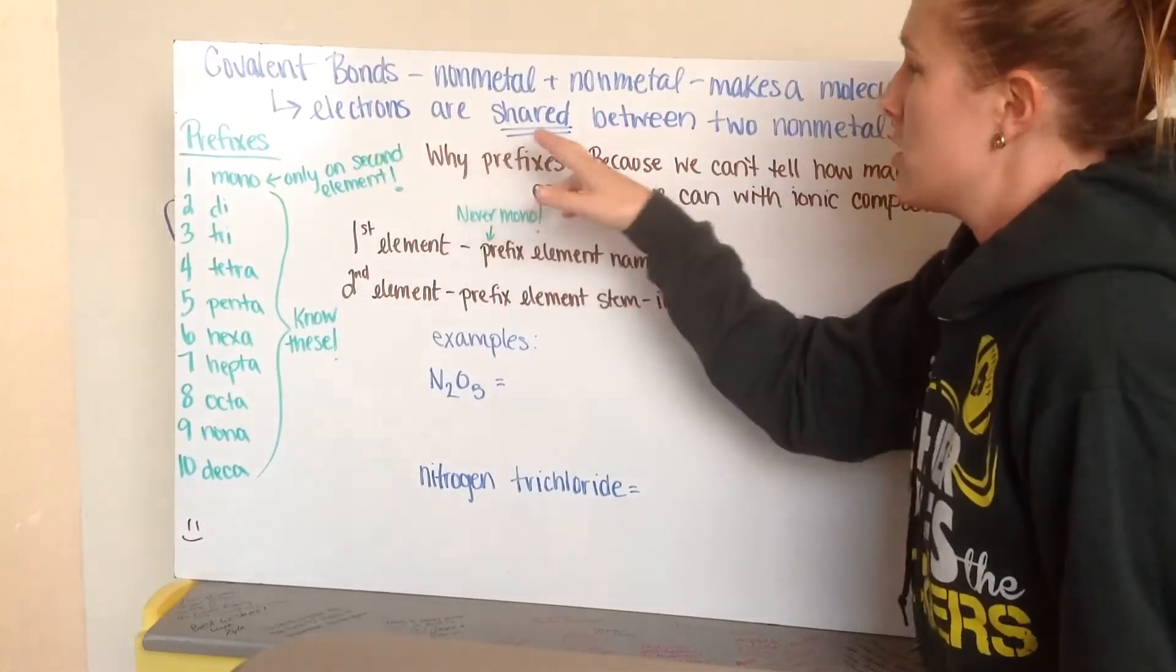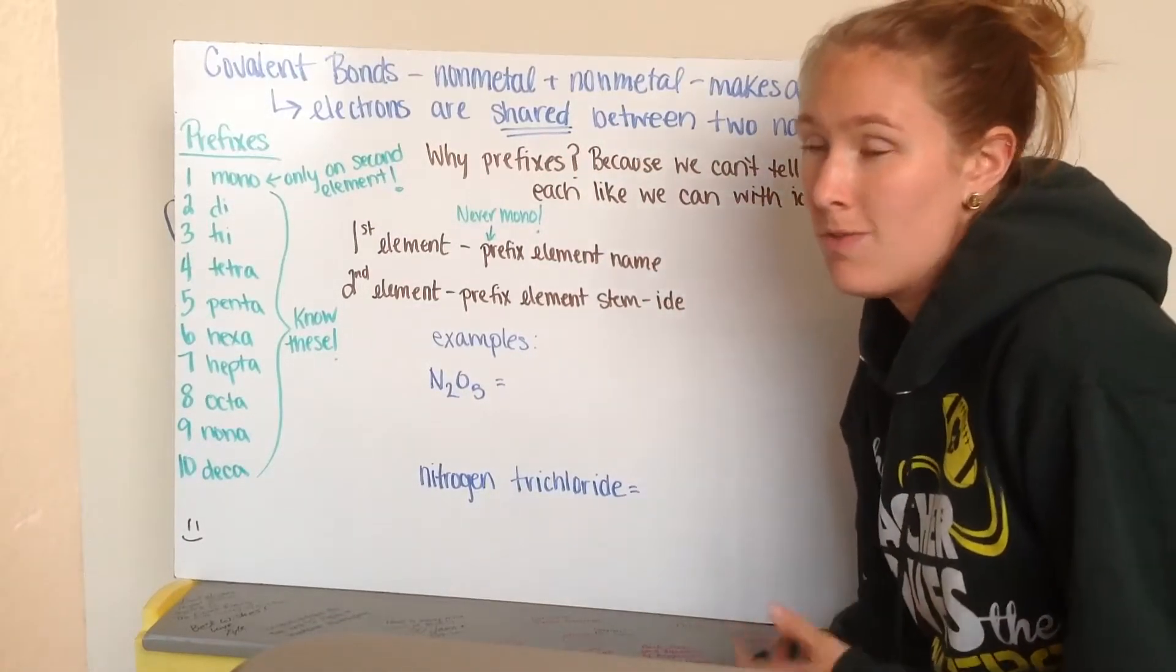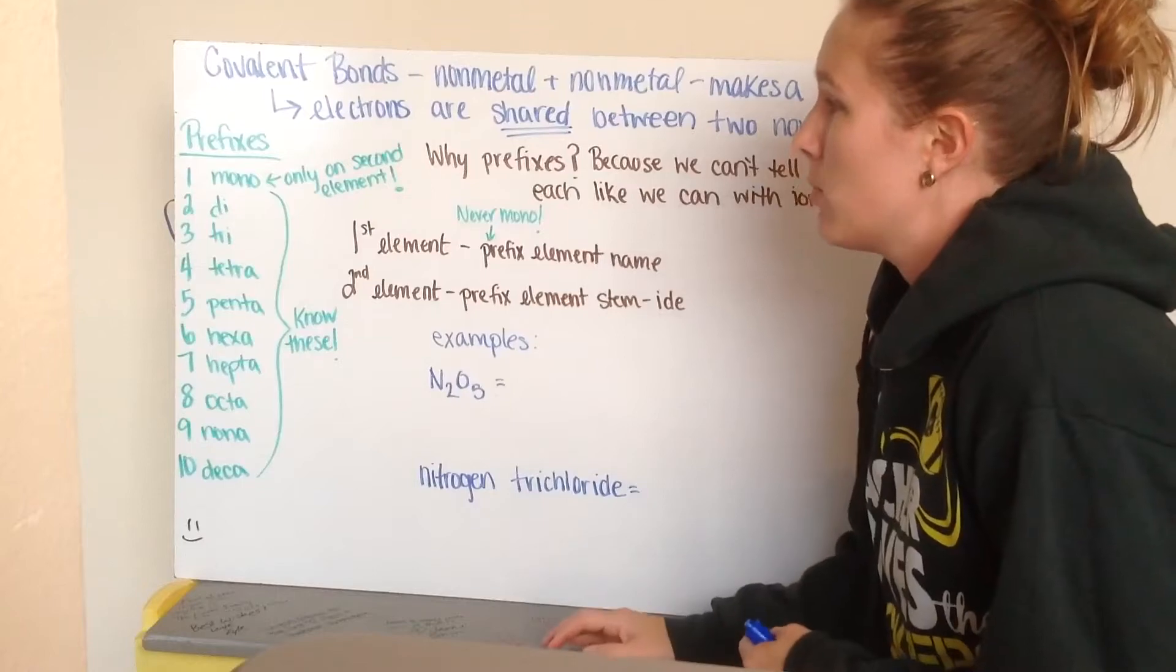In a covalent bond, electrons are shared between two non-metals. When we write covalent bonds and covalent molecules, we need to incorporate prefixes.